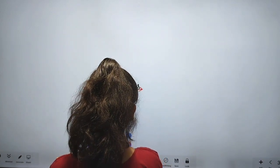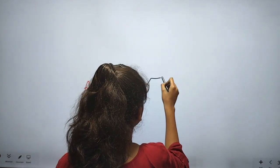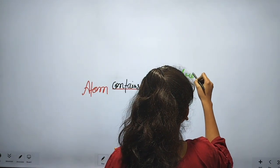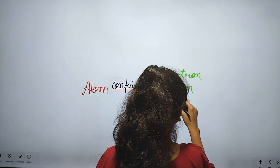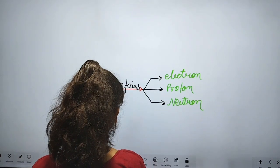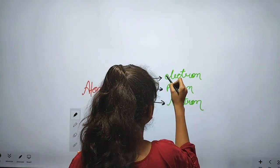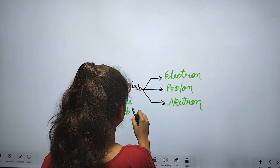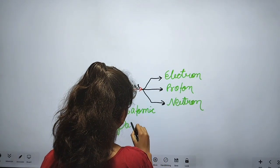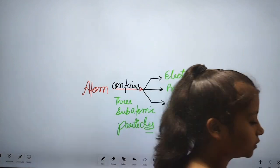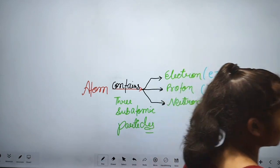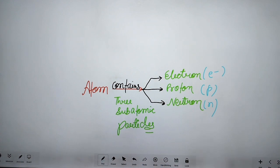An atom contains three subatomic particles, that is electron, proton, and neutron. So electron, proton, and neutron — these are the subatomic particles of an atom. Their symbols are e for electron, p for proton, and n for neutron.